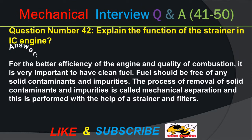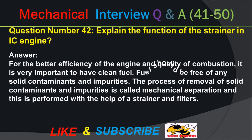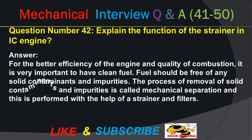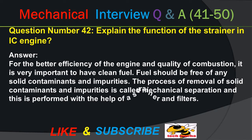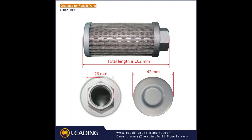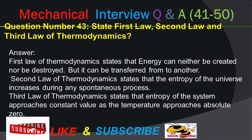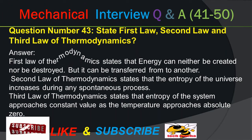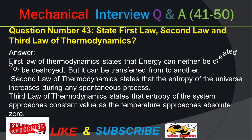Question number 42: Explain the function of the strainer in IC engine. Answer: For the efficiency of the engine and quality of combustion, it is very important to have clean fuel. Fuel should be free of any solid contaminants and impurities. The process of removal of solid contaminants and impurities is called mechanical separation, and this is performed with the help of a strainer and filter.